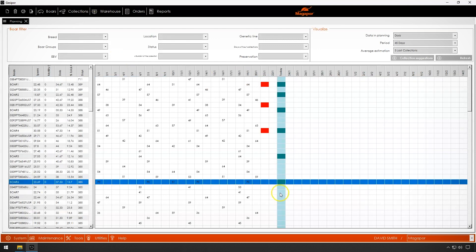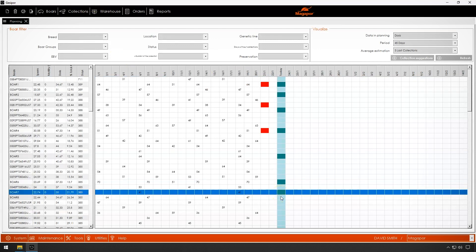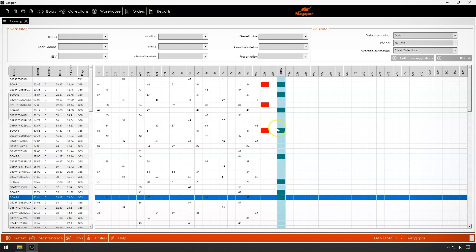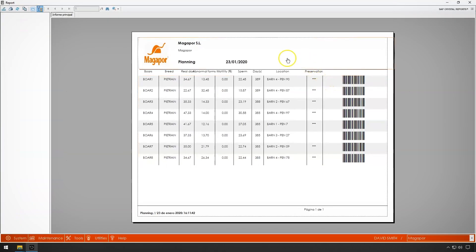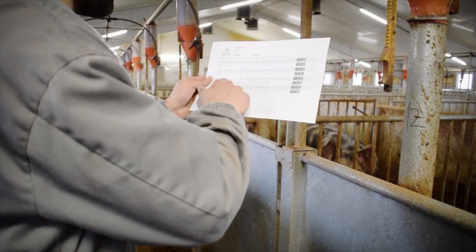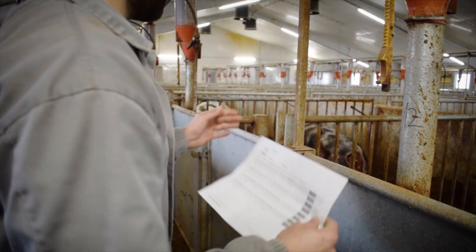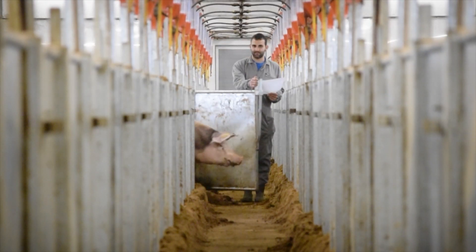Once the boars have been selected, the planning is printed to facilitate the work of the collection operators, displaying the boars, their location, and the quality of their latest collections. The printing of the planning facilitates the location of the boars to be collected, speeding up their movement towards the collection area.